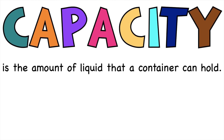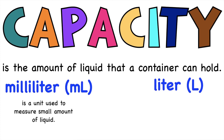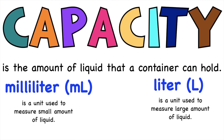Always remember, children, that capacity is the amount of liquid that a container can hold. We have the milliliter and liter. Milliliter is the unit used to measure small amounts of liquid, while liter is the unit used to measure large amounts of liquid. And remember, in every 1 liter, we have 1,000 milliliters.